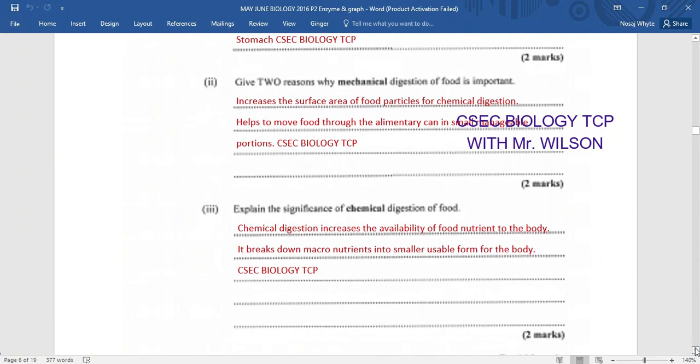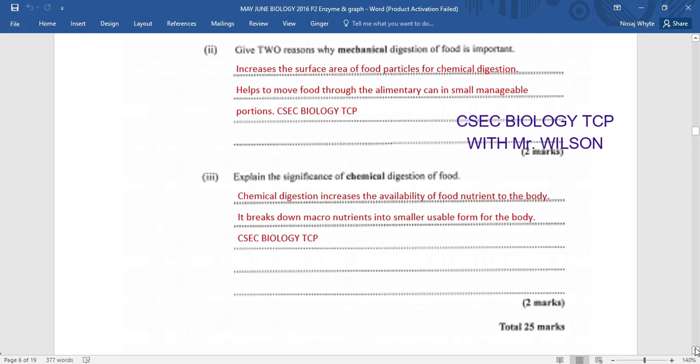Another question. Explain the significance of chemical digestion of food. Chemical digestion pretty much involves the use of enzymes. So chemical digestion increases the availability of food nutrient to the body. Another thing we know is that it breaks down macronutrients into smaller usable form for the body. So here we could look at protein being broken down into peptones and polypeptides and finally amino acids so the body would have it to use. So very, very important there is of course chemical digestion.